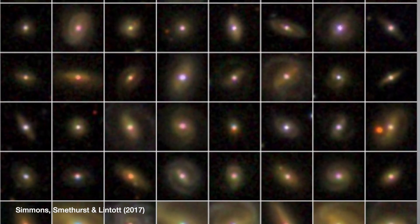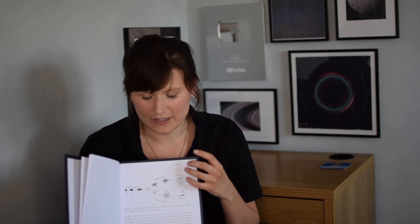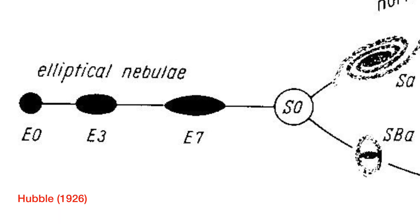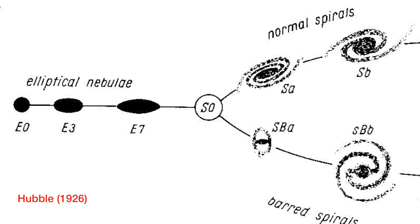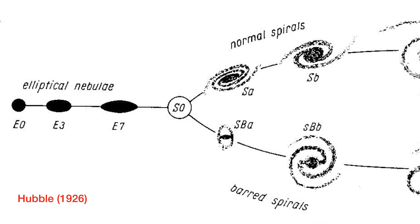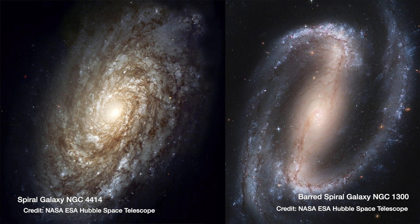The very obvious thing you can look at is the shape, which is why one of the first diagrams in the entire thesis is the very famous Hubble Tuning Fork diagram. Essentially, round galaxies sit on one side, getting steadily less round until you reach spirals - split into two tracks: those with bars and those without. How we classify galaxies hasn't really changed since this original diagram of Hubble's from the 1920s.